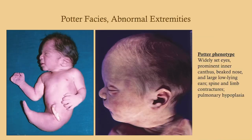This is Potter's Facies — something you'll want to know. Potter syndrome is not only seen in ARPKD. Look for the widely set eyes, the characteristic beaked-shaped nose, a prominent inner canthus, very low-lying abnormally placed ears — very obvious in this child — and limb contractures. Pulmonary hypoplasia is a really important manifestation here.